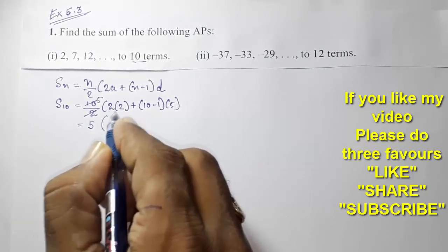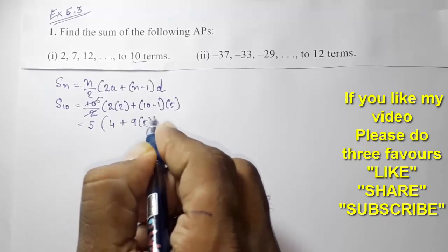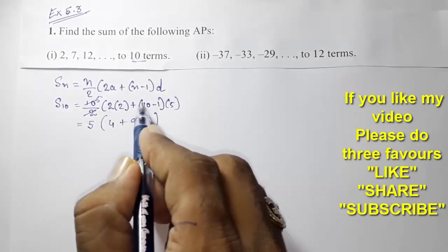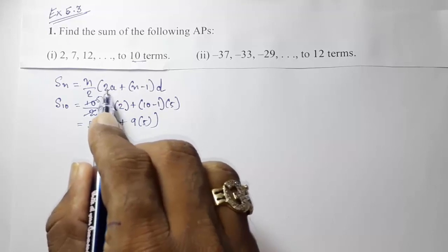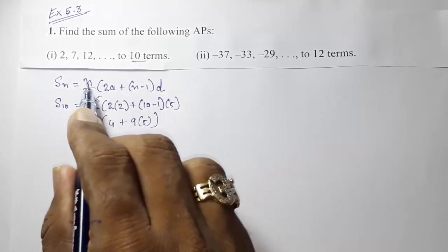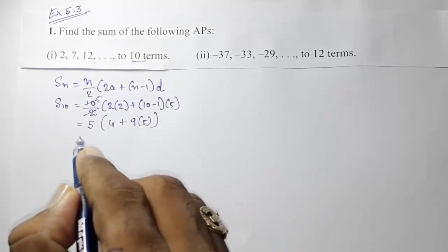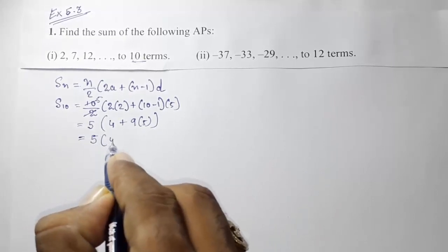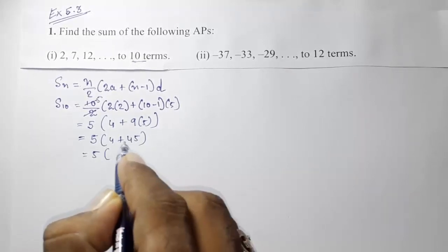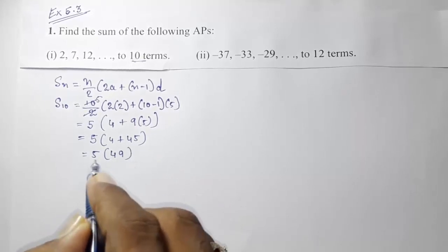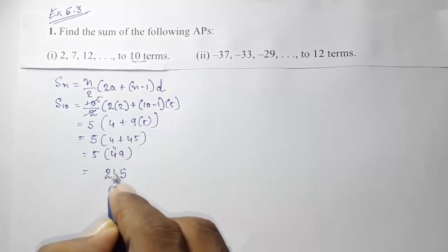So S10 = 5 × (2×2 + (10−1)×5) = 5 × (4 + 9×5). First solve n−1, then multiply by d, then multiply 2 by a, and add them. So 4 + 45 = 49, and 5 × 49 = 245. The sum of 10 terms is 245.